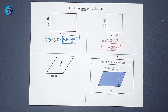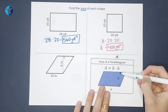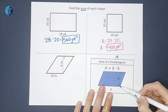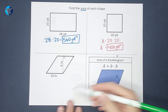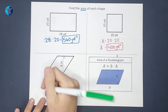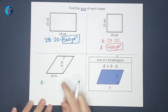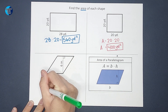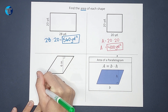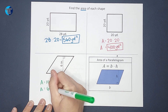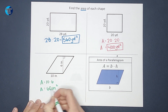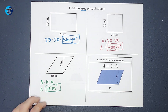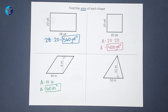Next we are moving on to a parallelogram — and guess what, it's actually the same equation: area equals base times height. One note: the height is from the bottom to the top where it makes a right angle; it's not the slanted side. For this one, the area is 10 times 6, which gives me 60, and we are in inches squared.